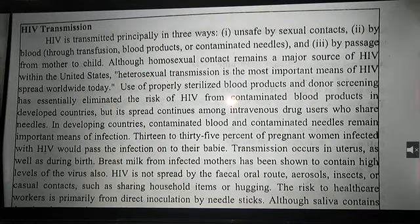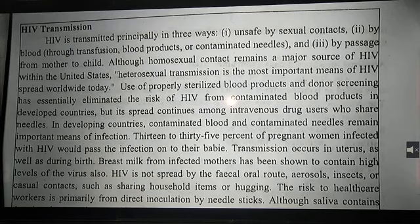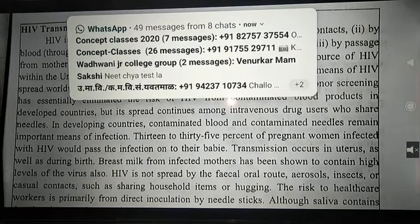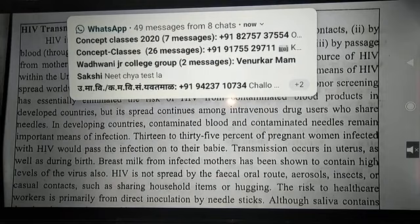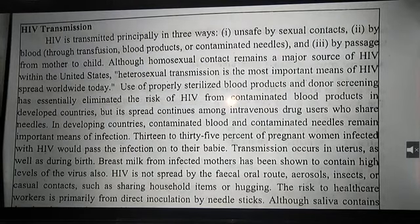To summarize: first is unsafe sexual contact, second is by blood transmission through needles, and third is from mother to child. These are the main ways of HIV transmission. Otherwise, if you talk to someone or share items, you will not get HIV transmission.